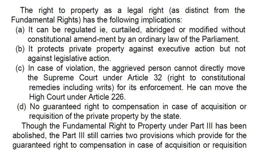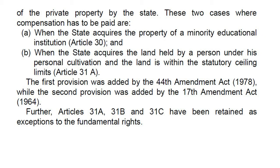Though the fundamental right to property under Part 3 has been abolished, Part 3 still carries two provisions which provide for a guaranteed right to compensation in case of acquisition or requisition of private property by the State. These two cases are: (a) when the State acquires the property of a minority educational institution — Article 30, and (b) when the State acquires land held by a person under personal cultivation within the statutory ceiling limits — Article 31a. The first provision was added by the 44th Amendment Act 1978, and the second by the 17th Amendment Act 1964.